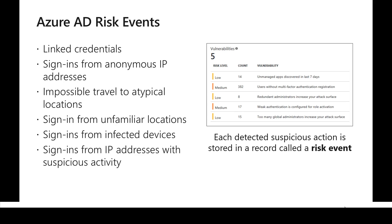The first risk event is linked credentials. Since we need password hash synchronization with Azure AD, this will compare the hashed password with any leaked credentials in public databases and alert if there is any password match. The next category of risk is signing in from a different anonymous IP address while traveling.